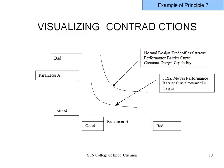For any parameter A, normal designs seek a compromise: if you improve A, then B decreases. The curve is far from the origin, far from ideal. If you want to bring both parameters toward the origin — both in a good condition simultaneously — only that solution qualifies as innovative. That is the principle.